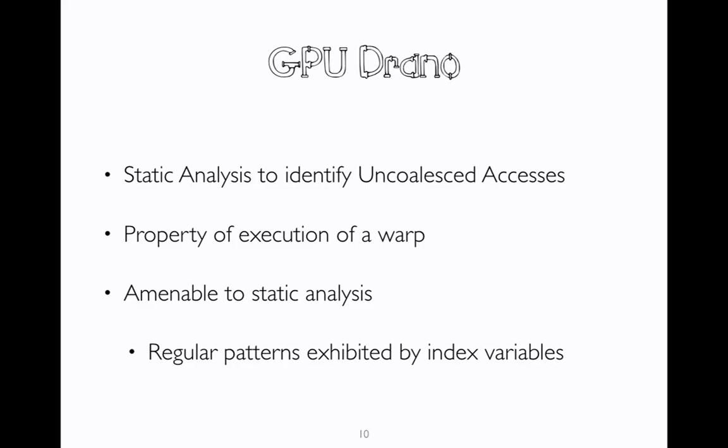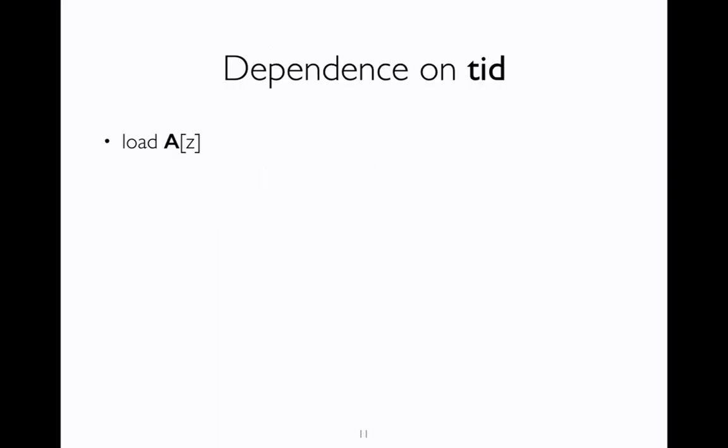This is what GPU Draeno does. It is a static analysis to identify uncoalesced accesses. As we saw, uncoalesced accesses is a property of the execution of the warp and happens at runtime. But it is possible to detect these accesses at compile time or statically because index variables exhibit regular patterns, and often we don't need concrete values to know whether an access is coalesced or uncoalesced. The essential idea is that for each global array access, we need to know what is the dependence of the index variable on thread ID.